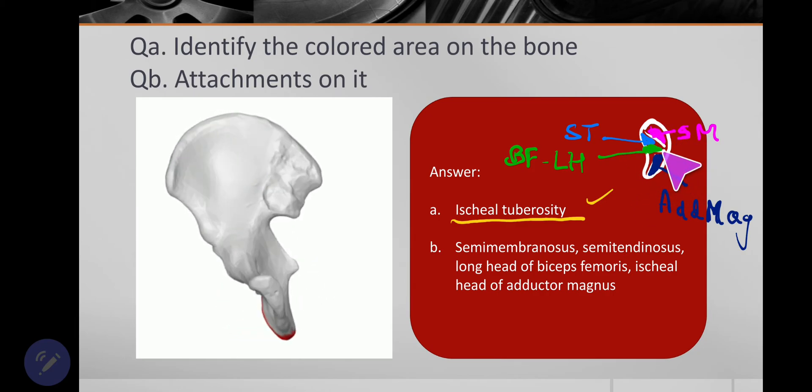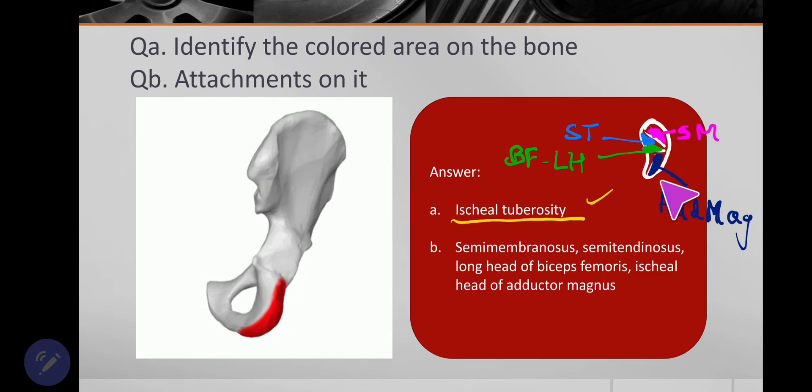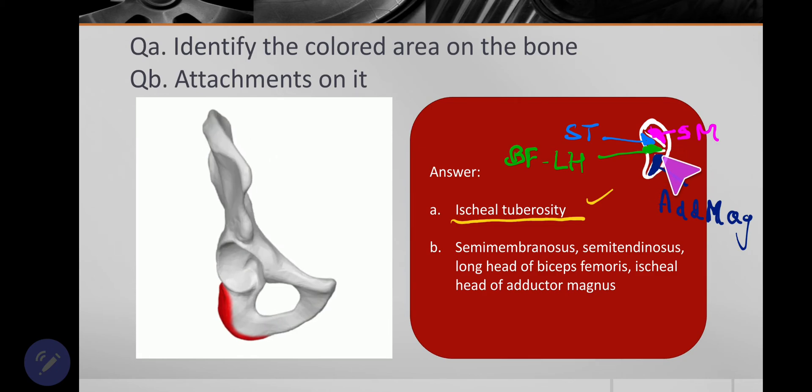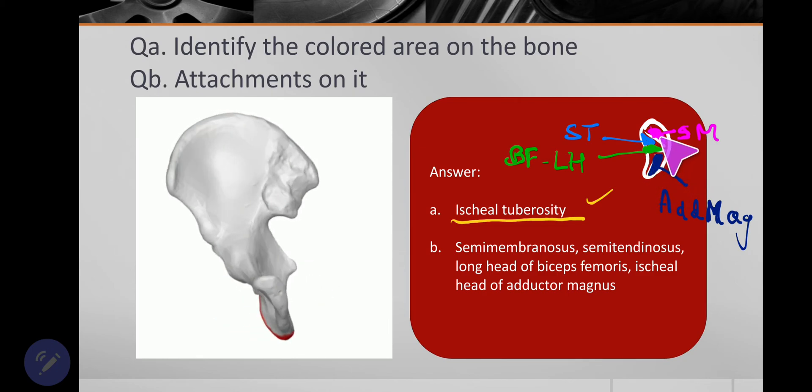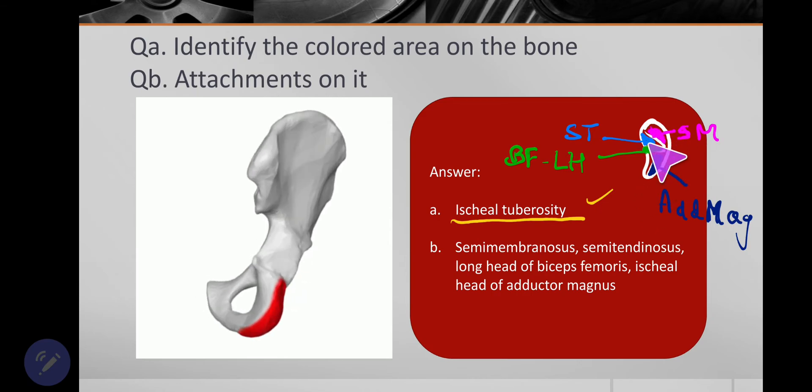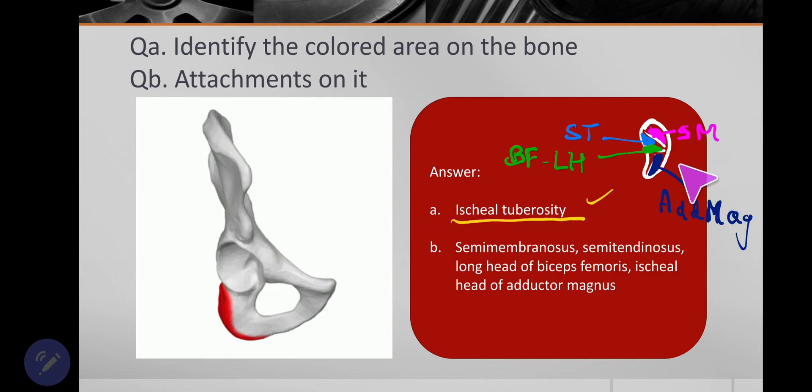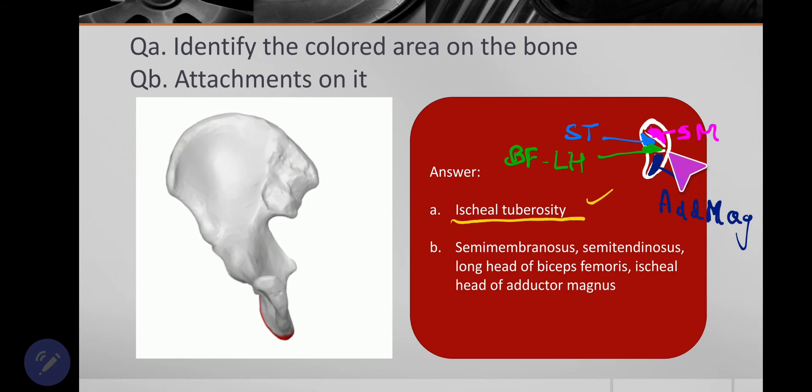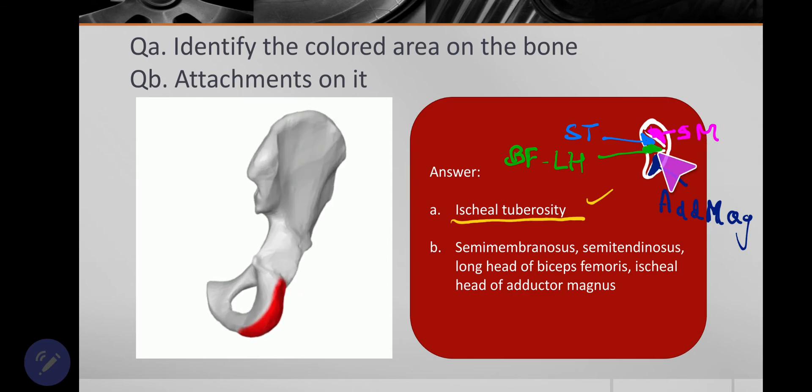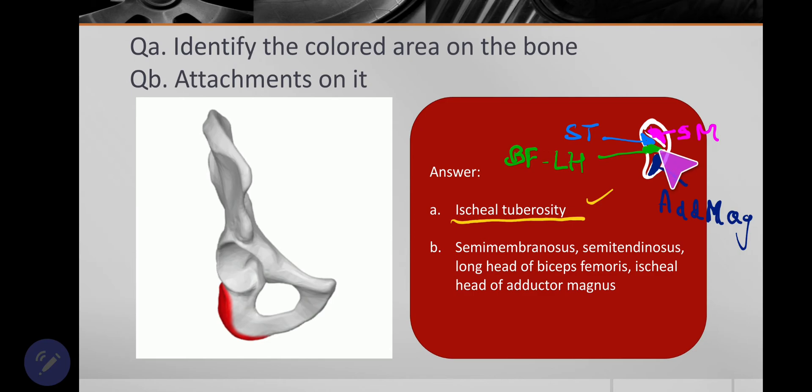And then the supply will be the same for all these muscles and that is tibial component of sciatic nerve. So all these four muscles, they are called hamstrings. Why they call hamstring? One of the criteria of the hamstring is that all these muscles should take origin from the ischial tuberosity and insert on either of the bones of the leg, and the nerve supply will be by tibial component of sciatic nerve, and the action - the prime action will be flexion of the knee as well as extension of the hip joint.